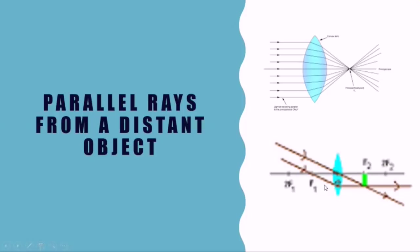In the second case, rays of light are again parallel and coming from a distant object, but these rays are not parallel to the principal axis — rather they make an angle with the axis — and we get a diminished, inverted, and real image of the object on the opposite side of the lens.